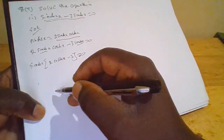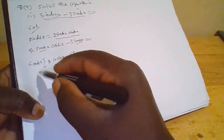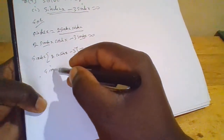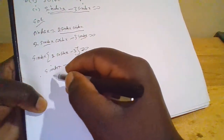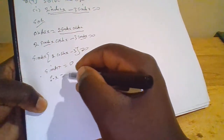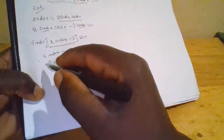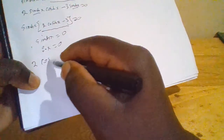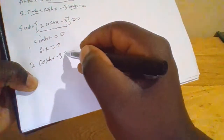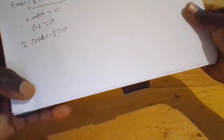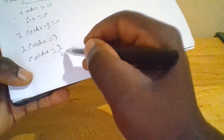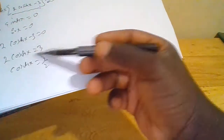Now from here you can see that sin(x) equals 0, therefore x equals 0. Again we have 2 cos(x) minus 3 equals 0, so 2 cos(x) equals 3, which gives cos(x) equals 3 over 2.